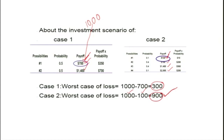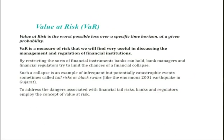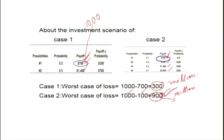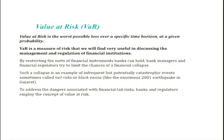For an institutional investor such as a pension fund, when these amounts are in millions or billions of dollars, this matters enormously. Value at Risk is the worst possible loss over a specific time horizon at a given probability. Using Value at Risk, we can see that Case 2 is worse than Case 1 — the maximum loss in Case 1 is $300, but in Case 2 the maximum loss is $900. This measure is especially useful in discussing the management and regulation of financial institutions.